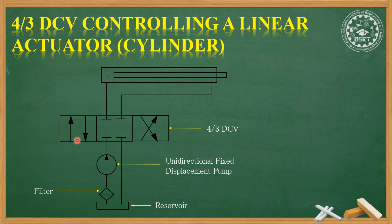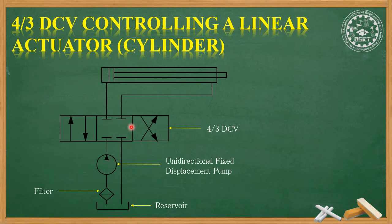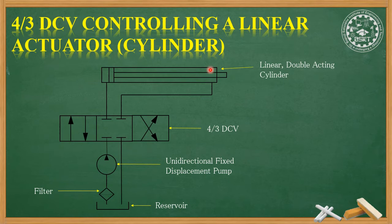From the pump, the oil goes up to the 4x3 direction control valve. Why 4? Because it has four ports: P (pump), A, B, and T (tank). These are the four ports. Why 3? Because 3 refers to the number of positions of the direction control valve — there is one box, a second box, and a third box, giving us 4 by 3. Then the oil goes to the linear double-acting cylinder. It is double acting because oil is supplied from both sides, and the piston movement is in a line, so it is called linear.